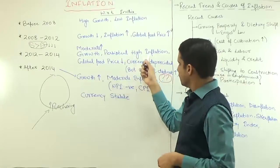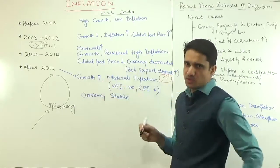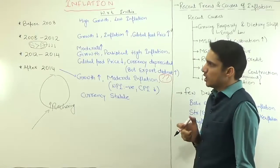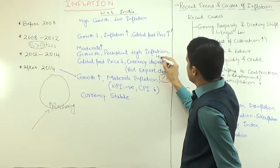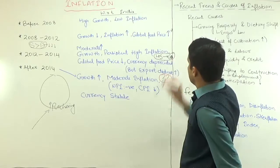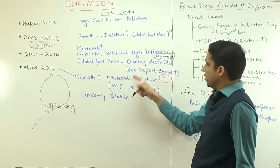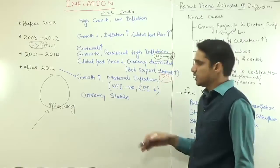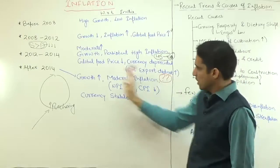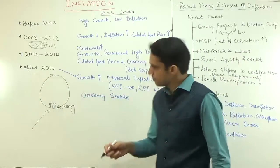The global food price decreased during this era, but our currency depreciated drastically — from 45 rupees to 60 rupees per dollar, as demand for the dollar increased. The question arises: even with currency depreciation, why didn't our exports increase? Ideally, currency depreciation should increase exports, but it didn't happen during this era — that remains a question we will address.